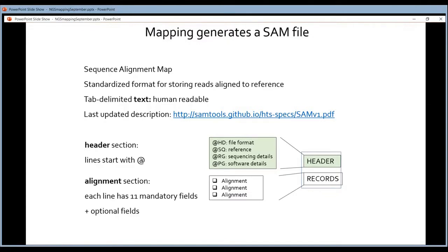So which reference was used, which mapper was used, what were the parameter settings of the mapper and that kind of information. It's in the header.